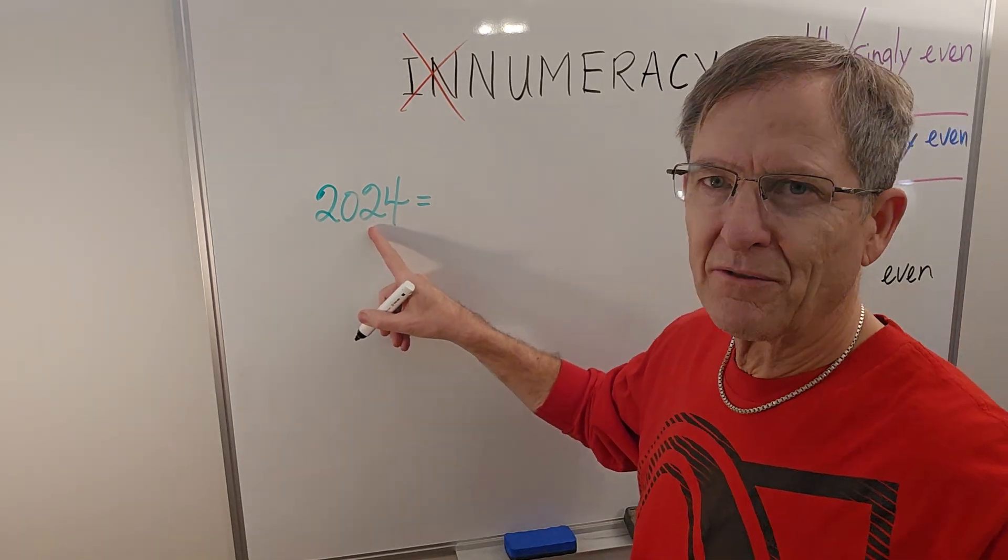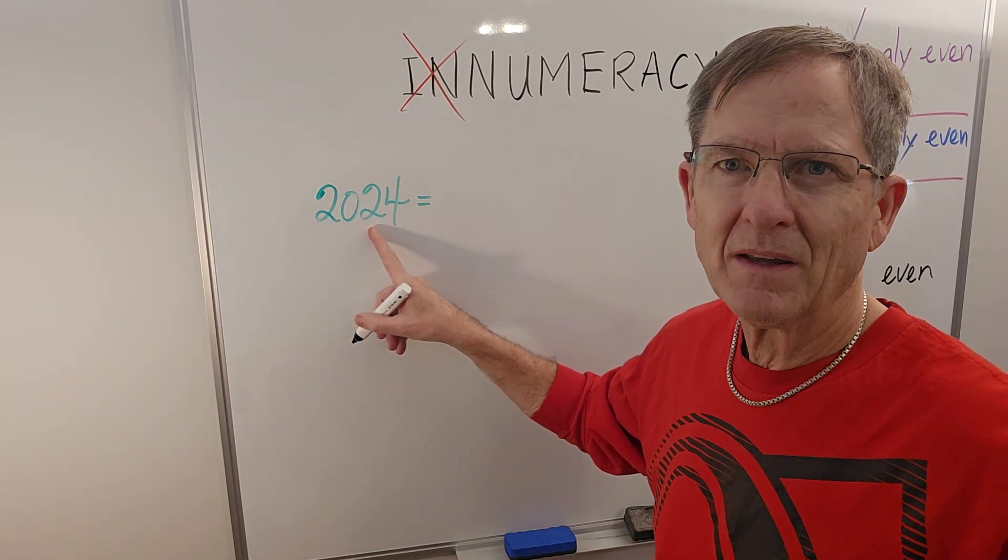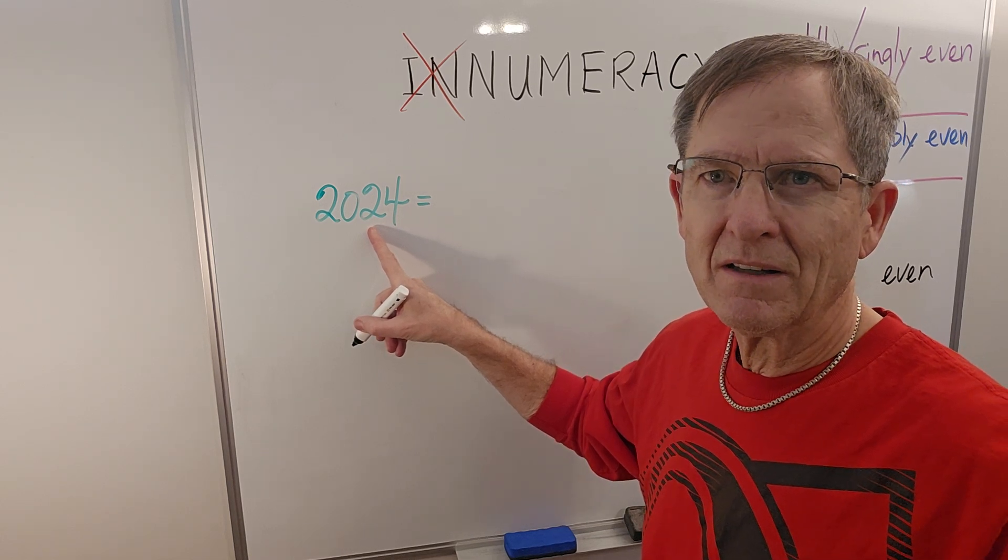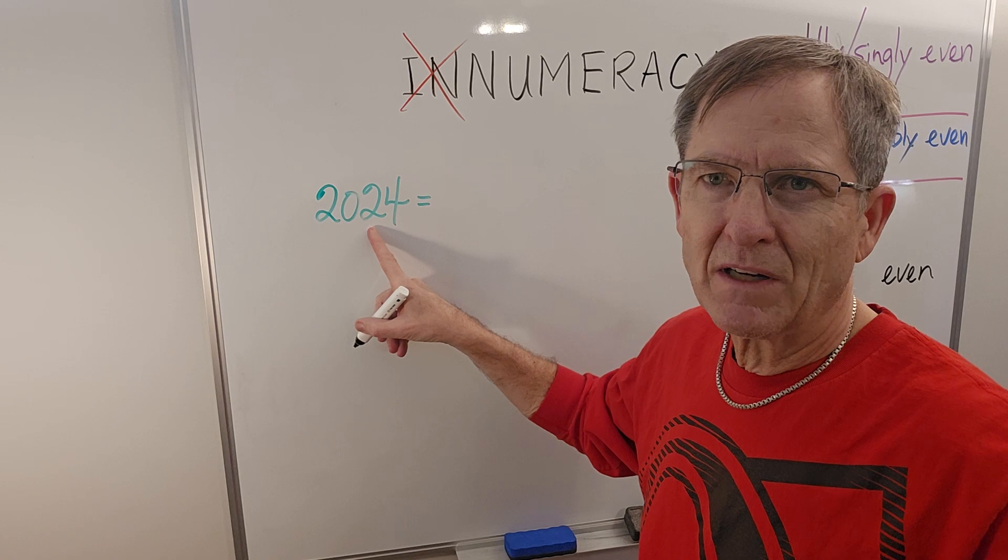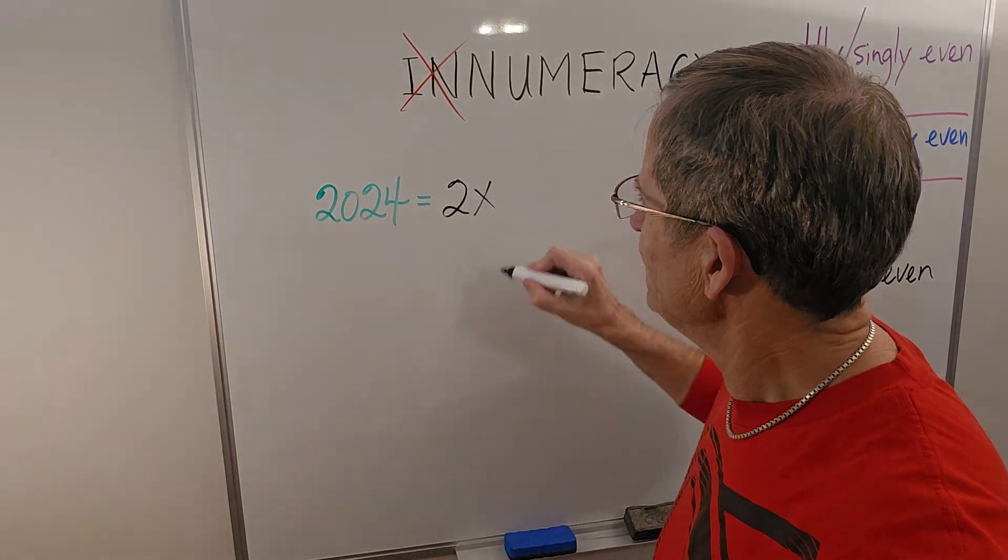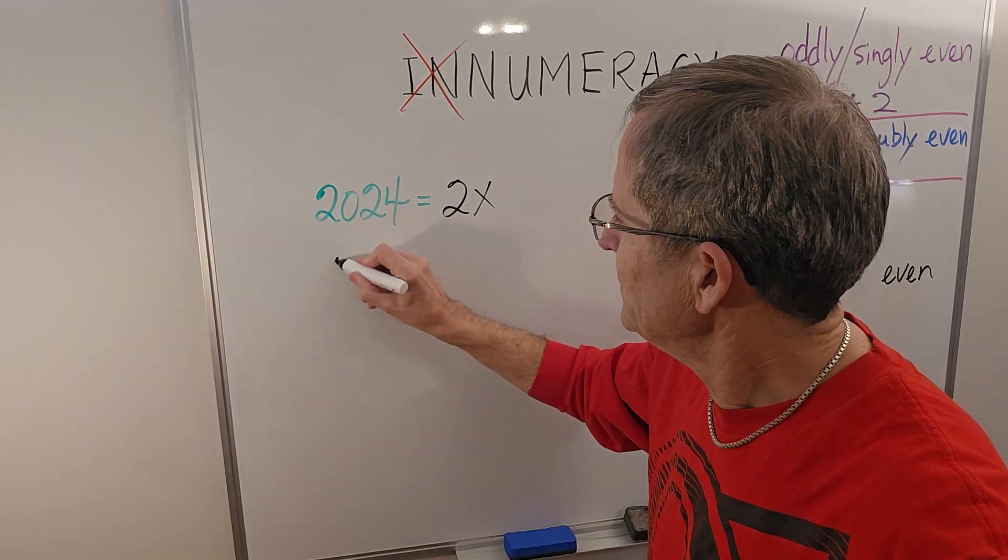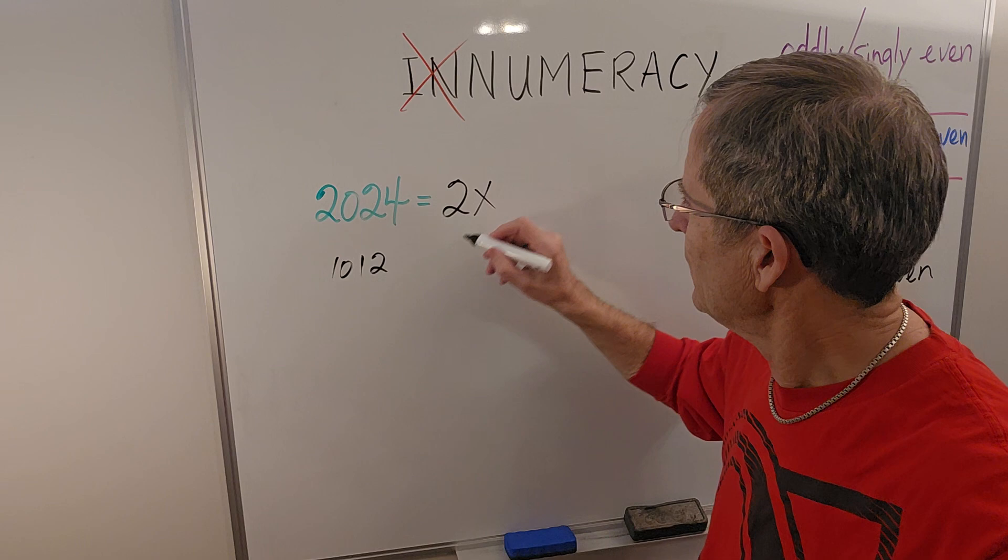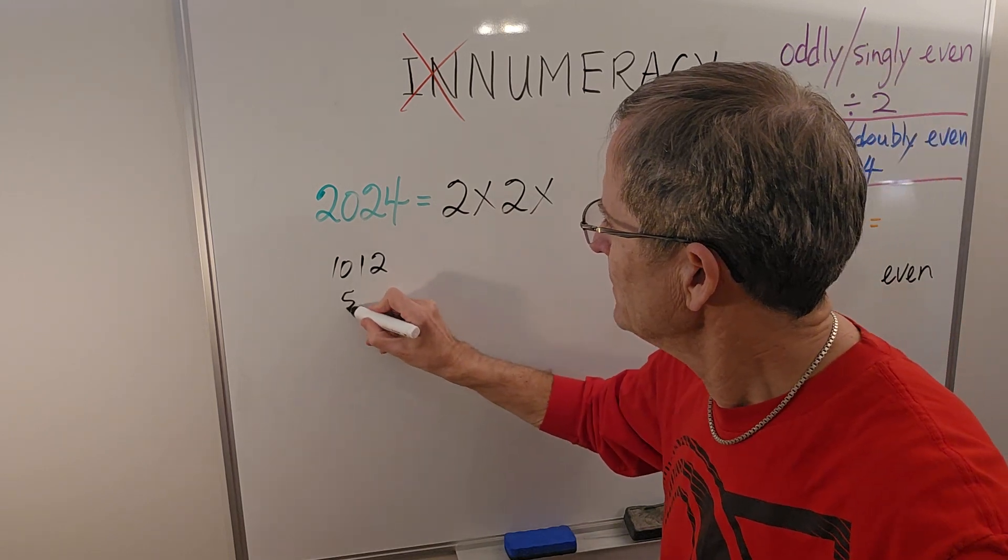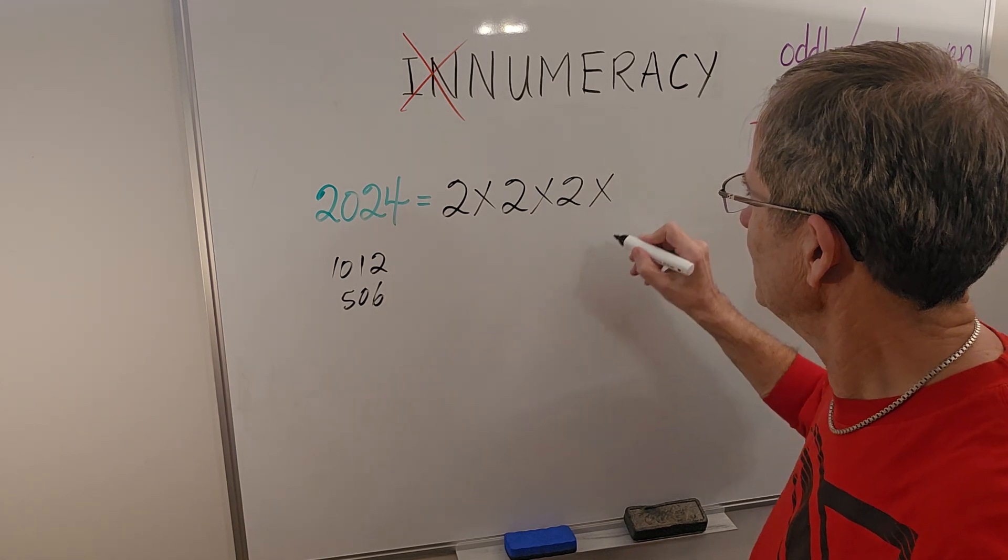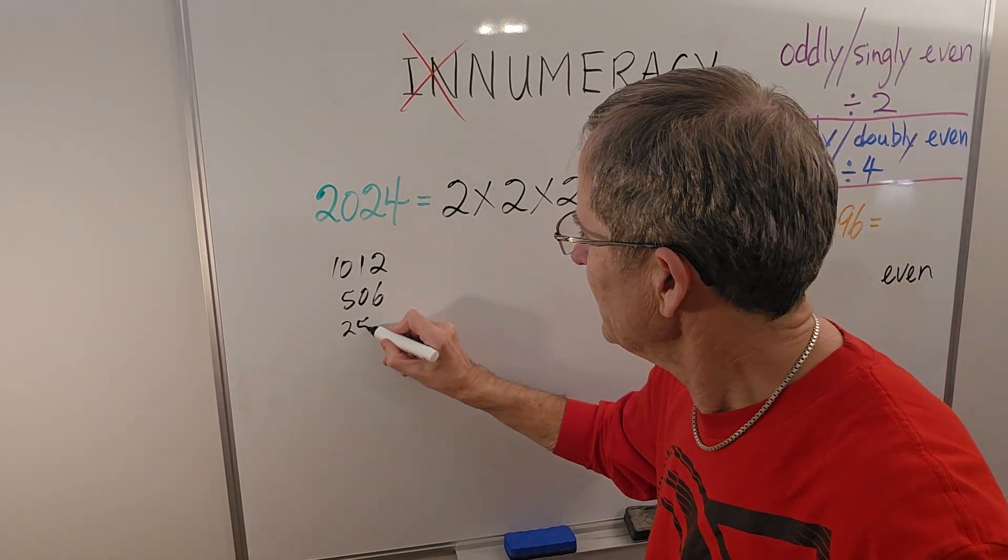Because our goal today is to factor the year. I've done episodes in the past about factoring the year, and you can check those videos out if you like. But obviously it's two times something, and that would be 1012. And 1012 can be divided by two, so that's two times 506. That can be divided by two, which is 253.